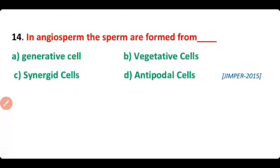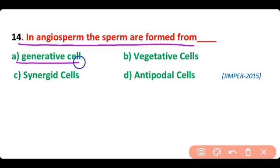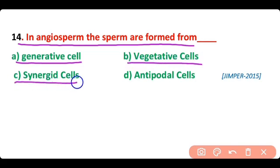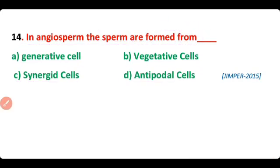Question 14. In angiosperms, sperm are formed from: generative cells, vegetative cells, synergid cells, or antipodal cells? The correct answer is option A. In angiosperms, the sperm are formed from generative cells.